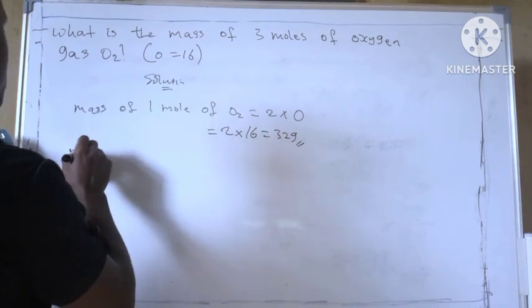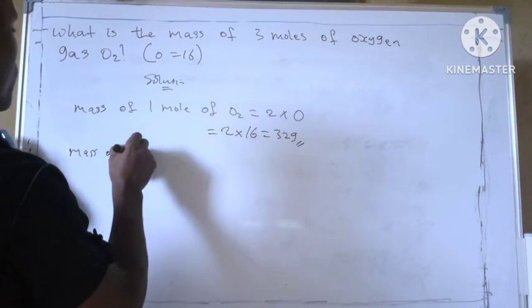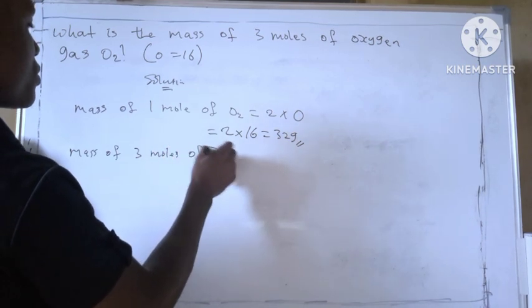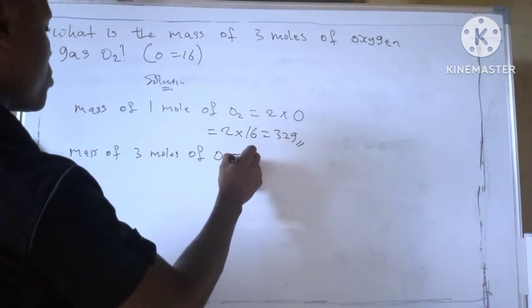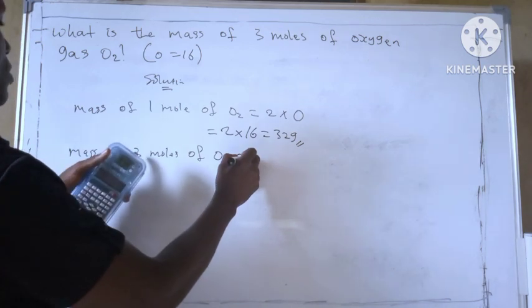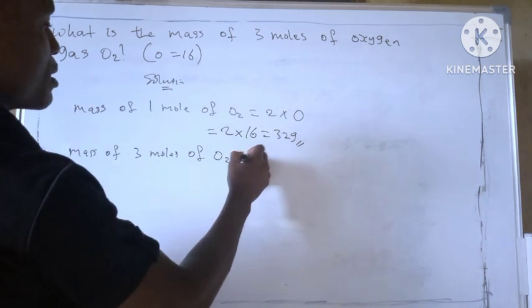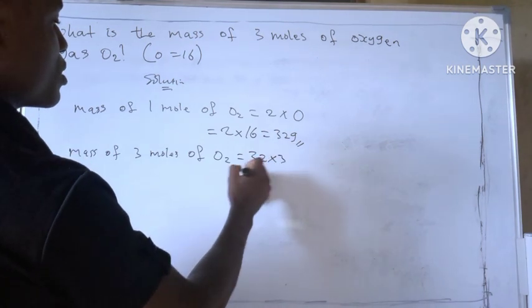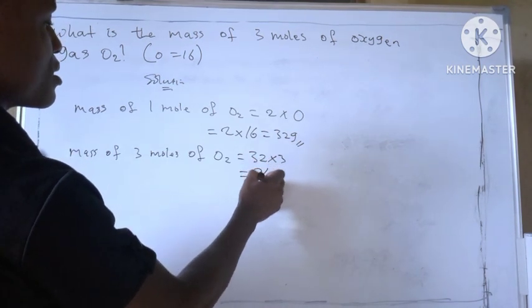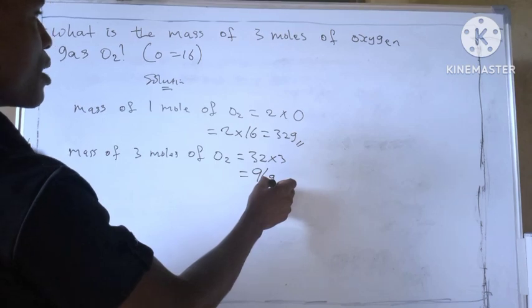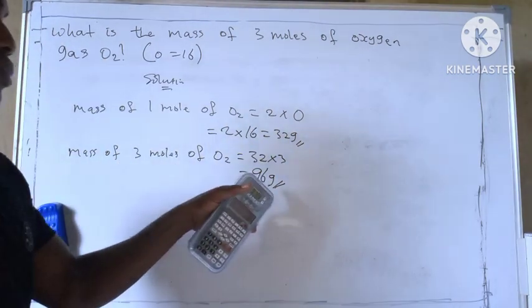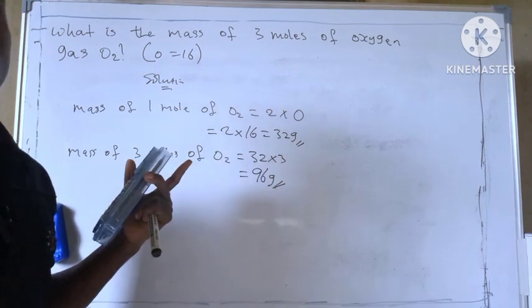Therefore, mass of three moles of oxygen will be 32 times three, which will give us 96 grams. So mass of three moles of oxygen gas will give us 96 grams.